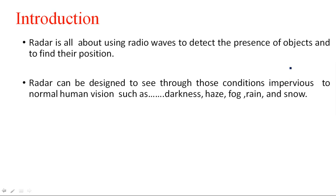Consider a human being standing here and one object nearby — he can see that object and approximately estimate its distance. But suppose heavy rainfall, heavy snow, or fog is present; in such bad environmental conditions we cannot identify the object. Also, we cannot identify objects at long distances like hundreds of kilometers. Radar can identify objects even in bad environmental conditions, at long distances, and irrespective of whether it is night or daytime.